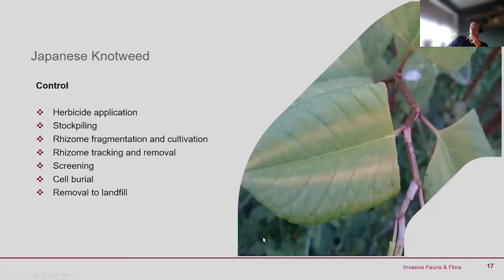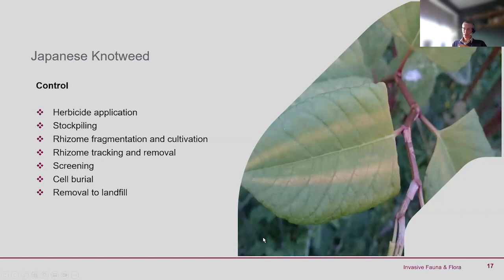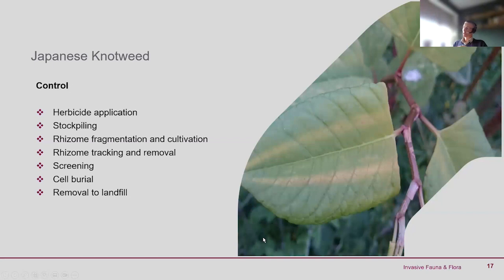An interesting picture here shows Japanese knotweed early in the year, probably around May. You can get a pair of white lines on the leaf, which is usually an indication that the plant is under stress — it may indicate previous herbicide treatment, but also a late spring frost as the plant begins to grow can cause this type of marking on the leaves.